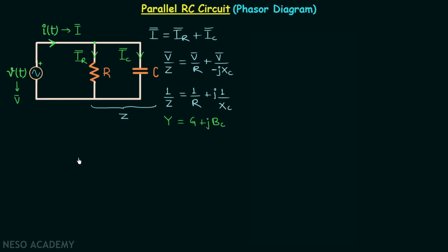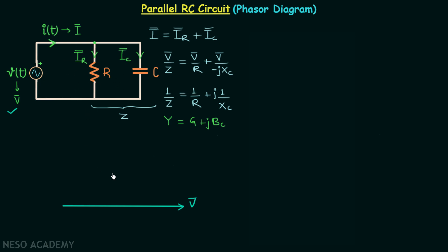Now we can plot the phasor diagram. We take V phasor as the reference phasor because it is the same across both the resistor and capacitor. For IR phasor, the current through the resistor, voltage and current remain in phase, so IR phasor is drawn along the reference with magnitude less than V phasor since IR equals V phasor divided by resistance R.